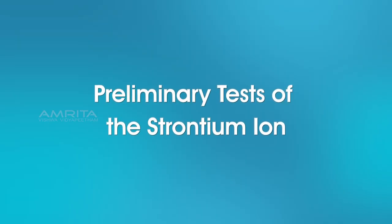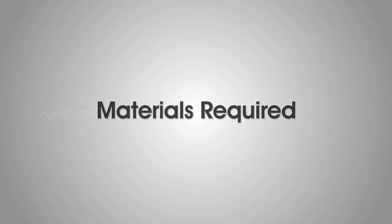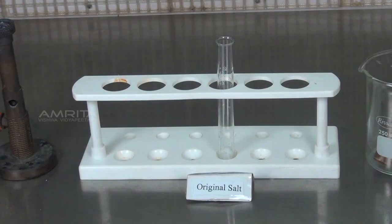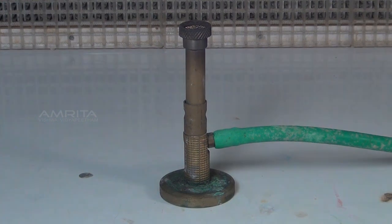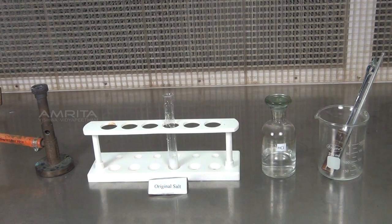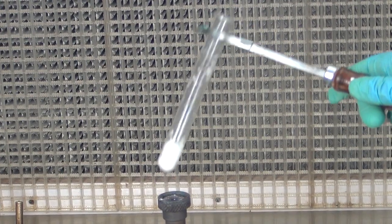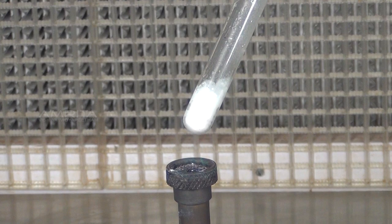We look at the preliminary tests of the strontium ion. Dry Heating Test. Materials required: original salt in a test tube, test tube holder and Bunsen burner. Procedure: take a small quantity of salt in a test tube and heat it over the Bunsen burner. A white residue glows on heating, indicating the presence of strontium ions.